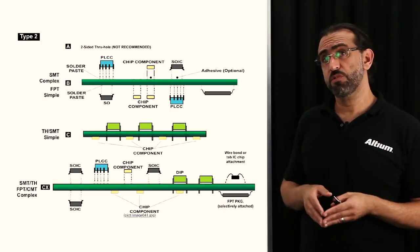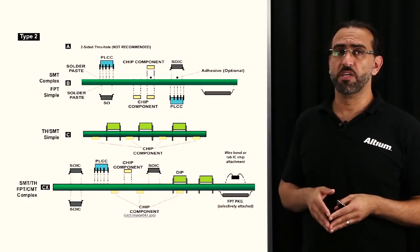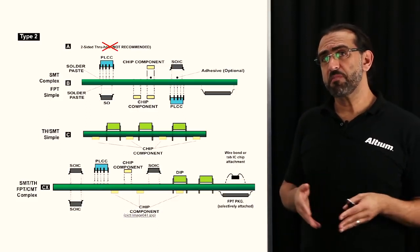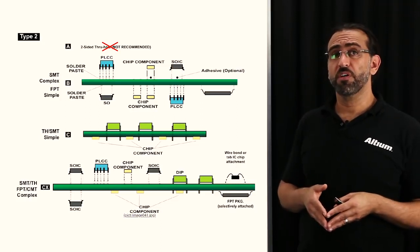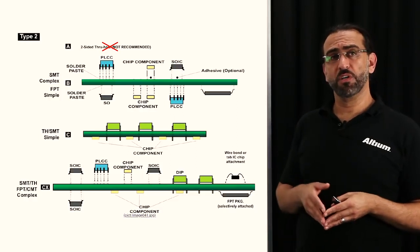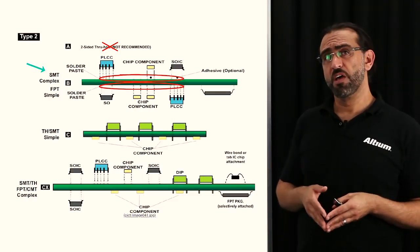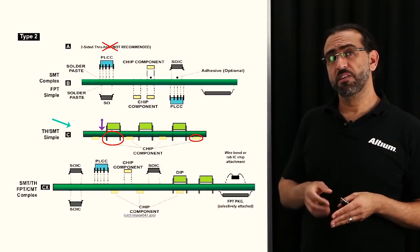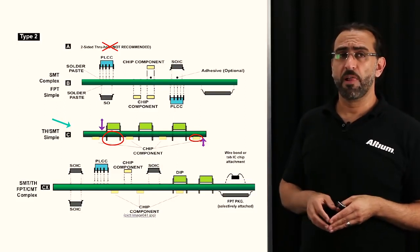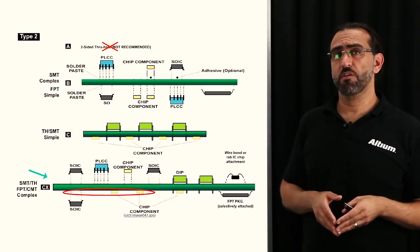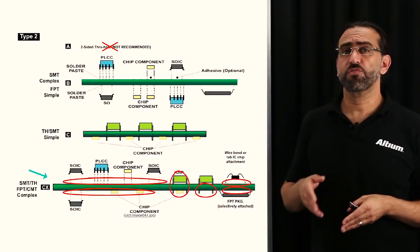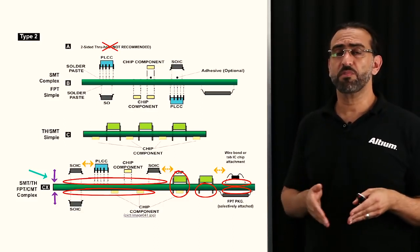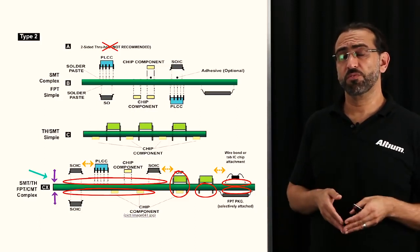Here we have what we refer to as Type 2, with components installed on both sides of the PCB. There is no image for the Type 2A configuration simply because a two-sided through-hole board is never recommended. The one labeled B is a PCB with surface mount on both sides. C has both through-hole and surface mount, with through-hole components on top and chip components on the bottom side. And the last one, labeled CX, is more complex with both component technologies — surface mount on both sides — and you can see how some components need to be spaced, especially between through-hole and surface mount components.